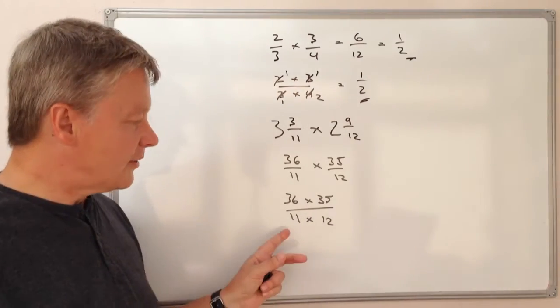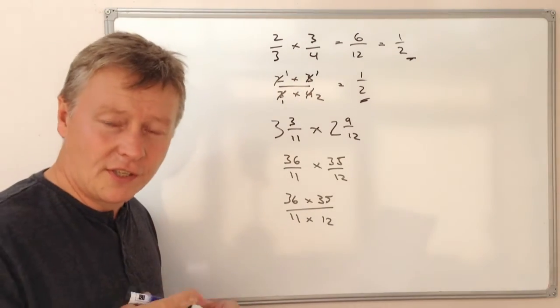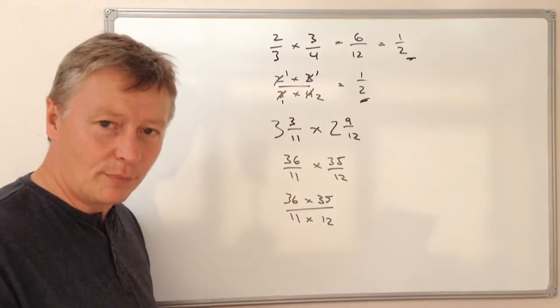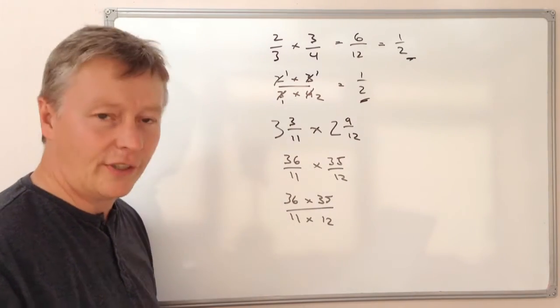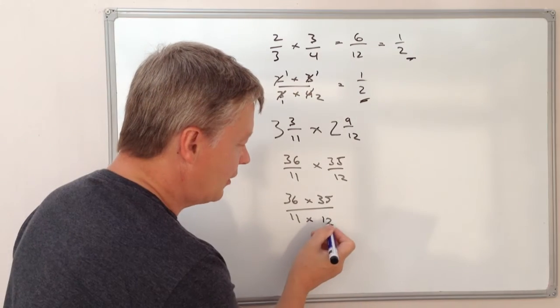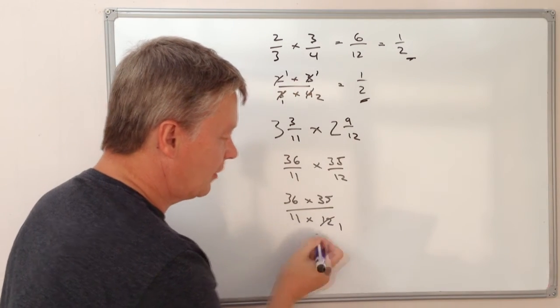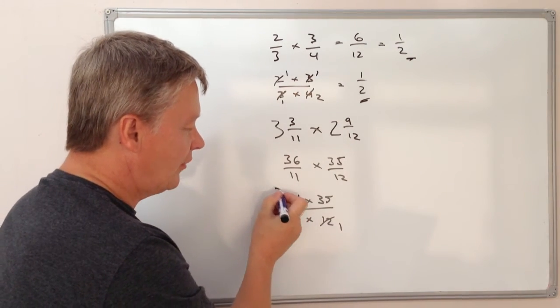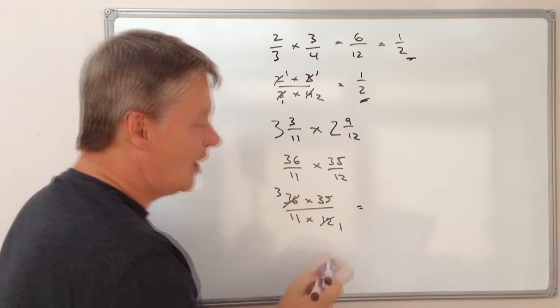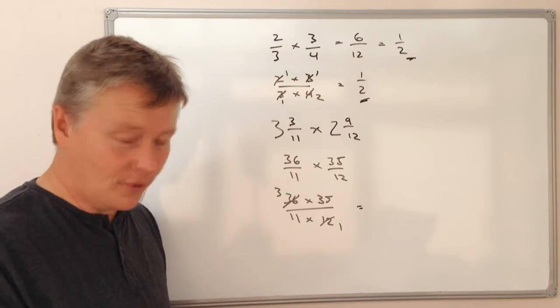OK, now I can't do anything about the 11 because it's a prime number. It's going to be hard to divide by anything. But I can do something with the 12 and the 36. So if I reduce that by 12, it becomes 1. I reduce that by 12, it becomes 3. So now I've got slightly easier numbers to deal with.